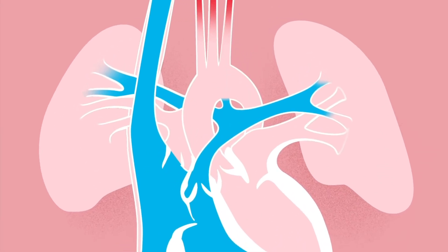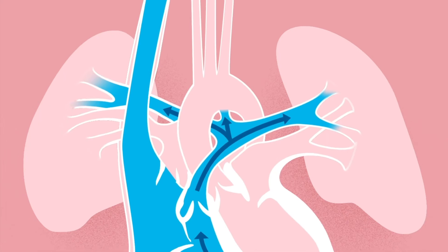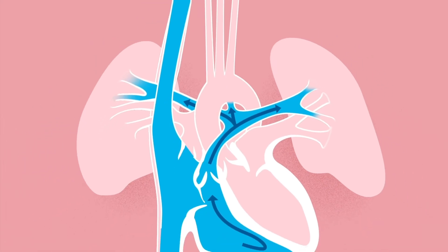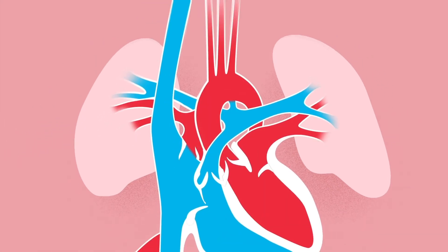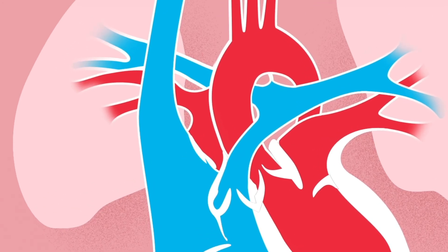The second connection is a blood vessel that connects the pulmonary arteries to the aorta. This connection lets the blood flow directly to the baby's body, skipping the lungs, which are not yet breathing air before birth. These unique connections are designed to close after the baby is born.